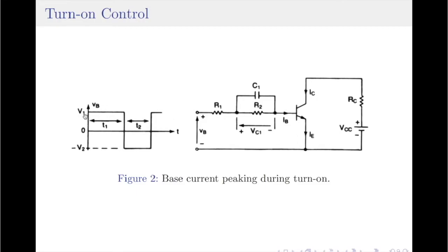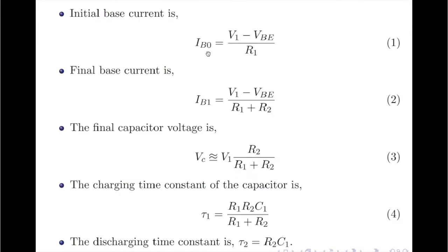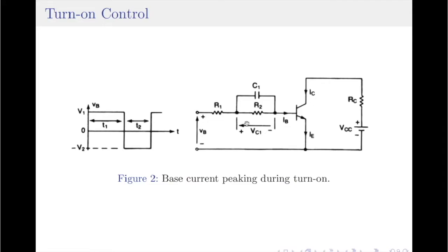Let us now write an equation for this initial current, denoted as IB0. Applying KVL to the base-emitter loop: Vb minus Vbe equals IB into R1. Since Vbe equals V1 and only R1 comes into picture, by rearranging the KVL equation, I obtain the initial current IB0 as (V1 minus Vbe) divided by R1. As time increases, the capacitor starts to charge and the base current starts to reduce.